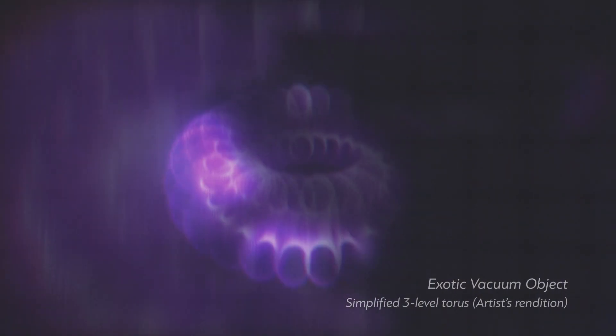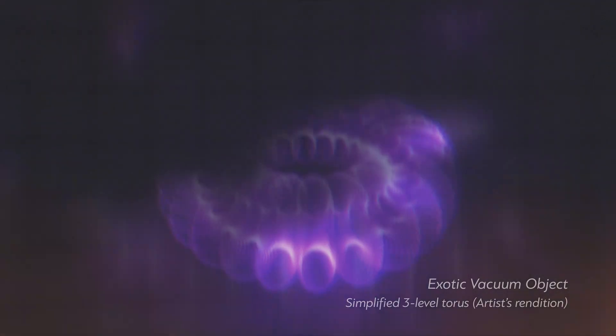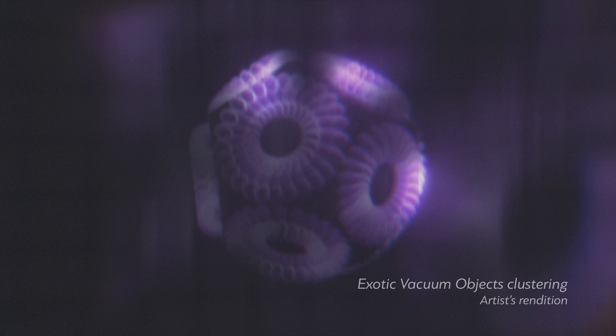For instance, certain plasma structures like exotic vacuum objects or their big clustered cousin, ball lightning, exhibit this toroidal geometry, which could also be common in other related phenomena.